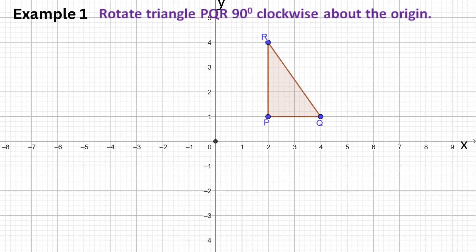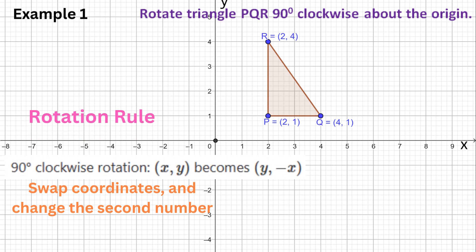To rotate triangle PQR about the origin 90 degrees clockwise, we will use the rotation rule. The rule states that we can just swap the coordinates and change the sign of the original X coordinate. Let's apply the rule to the vertices and create the new image triangle.